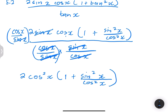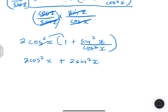Expanding the bracket: 2cos²x times 1 gives 2cos²x, and 2cos²x times sin²x/cos²x — the cos² cancels — giving 2sin²x. So I have 2cos²x + 2sin²x. Taking out 2 as a common factor gives 2(cos²x + sin²x) = 2 × 1 = 2. Simplified to just the number 2.